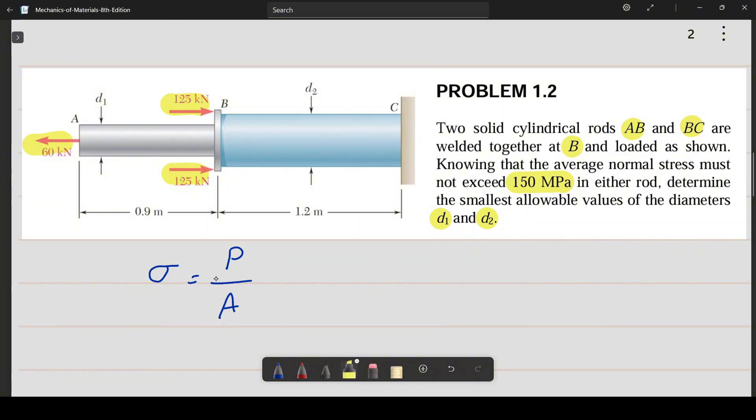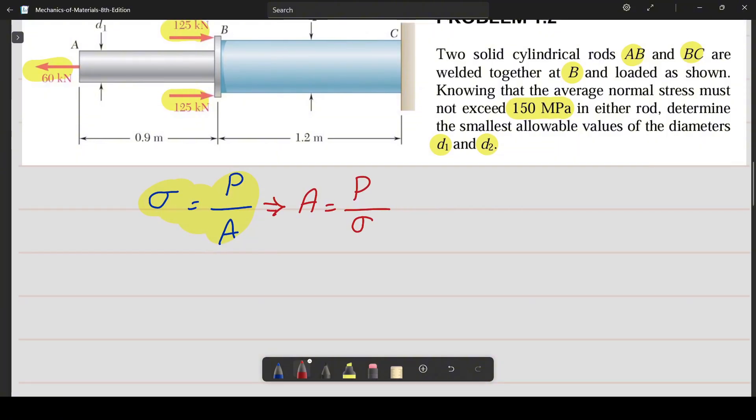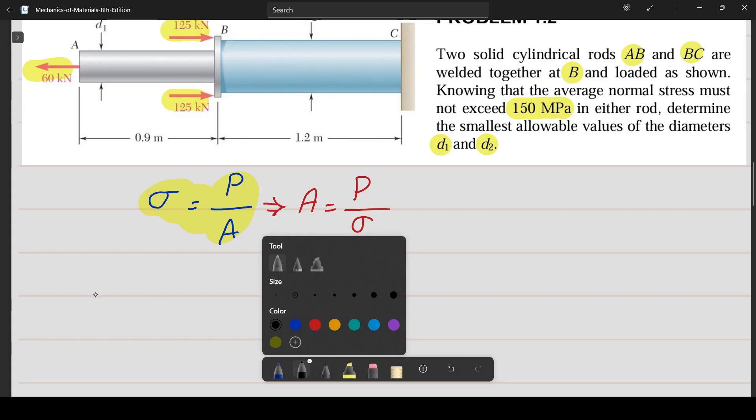Since the cross section is circular, the diameter is inside the area term. So by rearranging our base formula a bit, we get this new form: area equals load divided by stress. All right, so let's plug in the value of the load and stress for rod AB so we can calculate the cross section area.